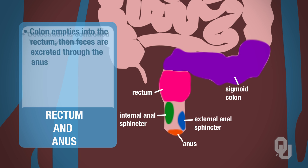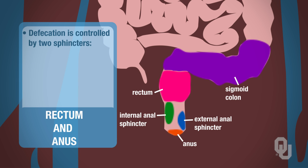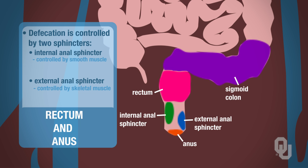Defecation is actually controlled by two different sphincters. There's an internal anal sphincter, and this is composed of smooth muscle. Then there's the external anal sphincter, which is controlled by skeletal muscle.